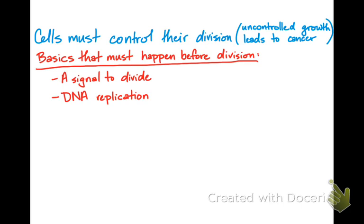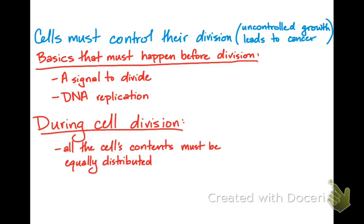During cell division, pretty much the basics are that the cell's contents must be equally distributed. They have to get exactly half the genetic material and it has to be a complete set of chromosomes,